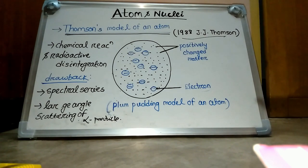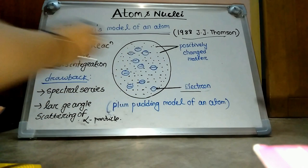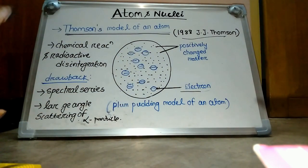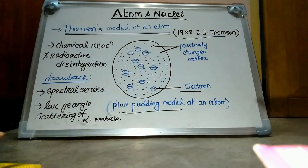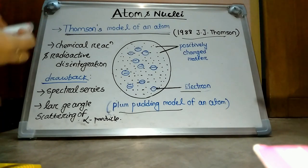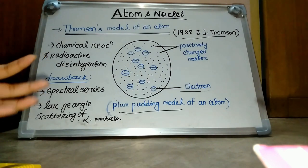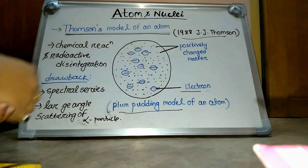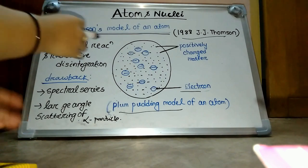In 1898, J.J. Thomson proposed that all the positively charged matter is uniformly distributed throughout the atom and electrons are embedded within it, like seeds in a watermelon or plums in a pudding. So this model is also known as the plum pudding model. The mutual repulsion of electrons is equal to the attraction force between the electrons and the positively charged matter, so the atom is neutral and stable.